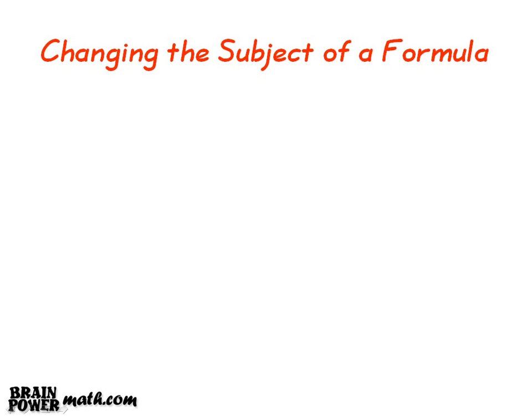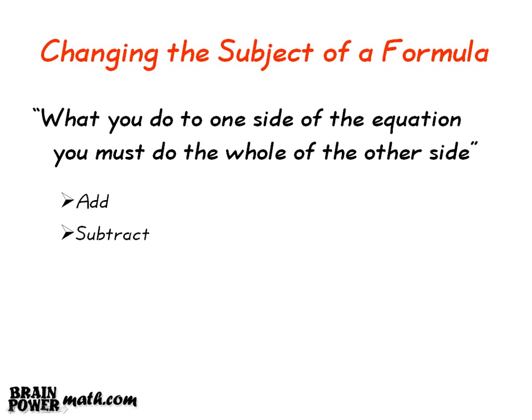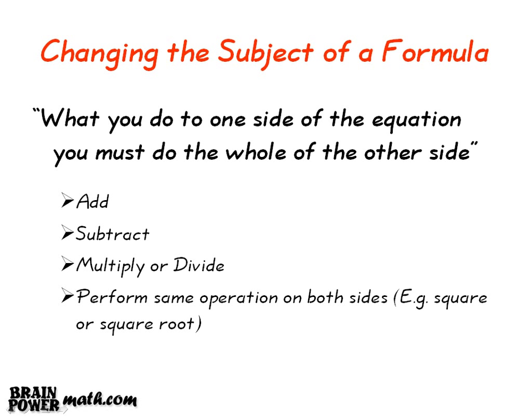We will now look at the area of algebra, which is sometimes called manipulating a formula, or changing the subject of a formula. For these types of questions, you must remember that what you do to one side of the equation, you must do to the whole of the other side. In these questions, you may add or subtract the same quantity from both sides, multiply or divide both sides by the same quantity, and perform the same operation on both sides — for example, squaring both sides or getting the square root of both sides.